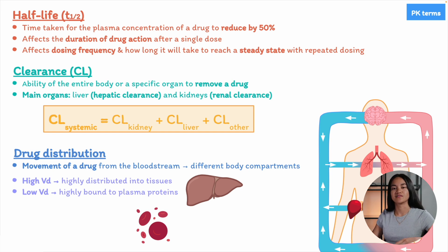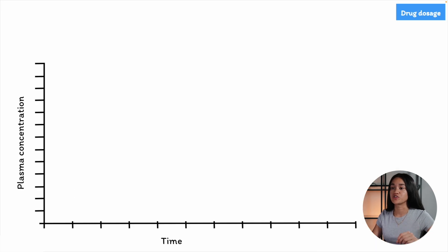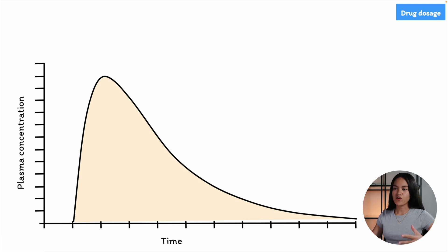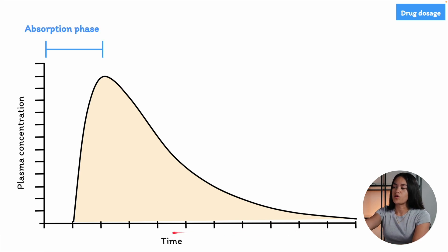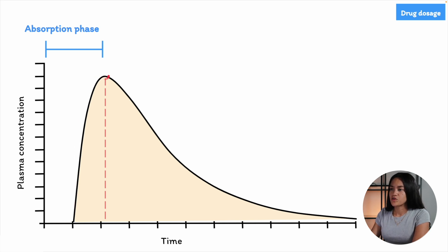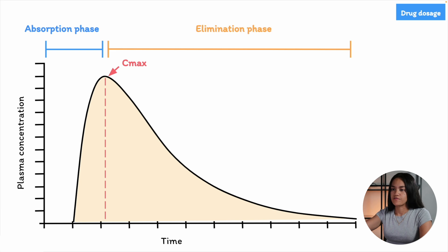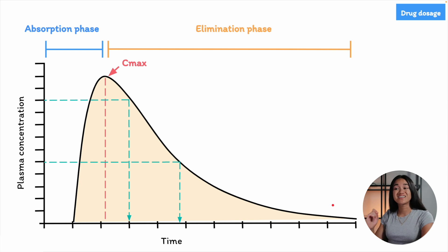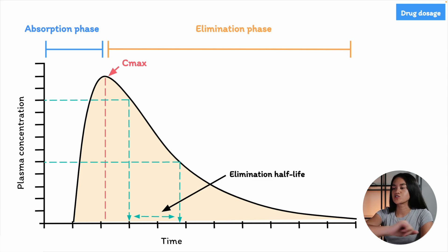Now let's look at the drug plasma concentration-time profile after administration of a single dose. There are different phases in pharmacokinetics. At the very start there is the absorption lag time and then the absorption phase. Then we reach a maximum concentration known as Cmax, which occurs at time Tmax, and then we enter the elimination phase. The elimination phase shows an exponential decay, and from it we can calculate the time required for a 50% decrease in drug plasma concentration — this corresponds to the half-life.